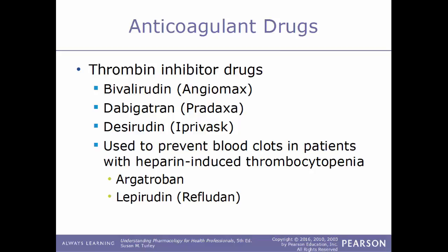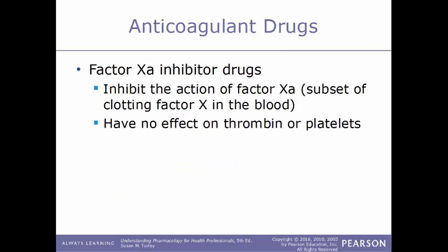Examples of thrombin inhibitors: bivalirudin, sold under the trade name Angiomax; dabigatran, sold under the name Pradaxa; desirudin, sold under the trade name Iprivask. Some thrombin inhibitors are used to prevent blood clots in patients with heparin-induced thrombocytopenia, which is a deficiency in platelets within the blood. Examples of these include argatroban and also lepirudin, sold under the trade name Refludan. Another type of anticoagulant drug is factor Xa inhibitor drugs, which inhibit the action of clotting factor Xa — a subset of clotting factor 10. These have no effect on thrombin or on platelets.